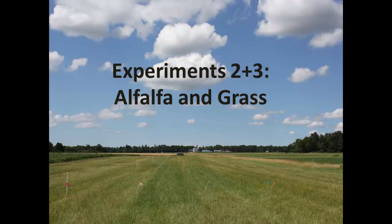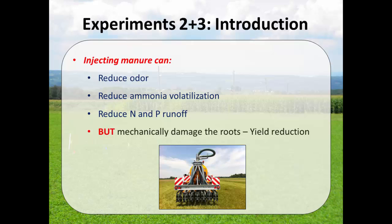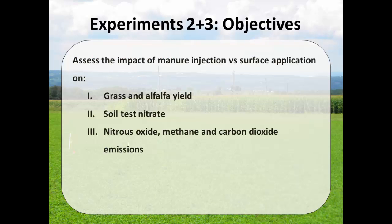Now we're going to alfalfa and grass. It's becoming common to inject manure into alfalfa and grass hay crops. It has advantages: reduced odor, reduced ammonia, and reduced N and P runoff. But the problem is that injection can mechanically damage roots and cause yield reduction. So our objective is to assess the impact of manure injection versus surface application on crop yield, soil nitrate, and nitrous oxide, methane, and carbon dioxide emissions.